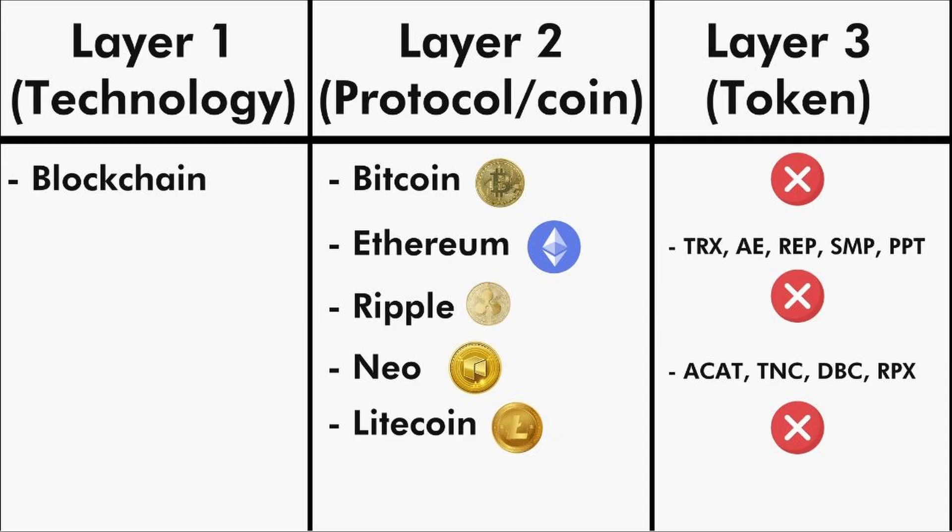In our layers of blockchain, an ICO can happen on two different layers. Most commonly what we see is an ICO happening on the token layer, where companies fund their idea through this. At the same time, an ICO can also happen on the protocol or coin layer, where somebody comes up with a new protocol for blockchain and can issue coins in an ICO. Most commonly, though, it happens in the token layer.